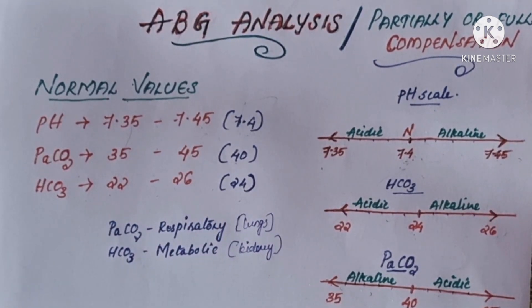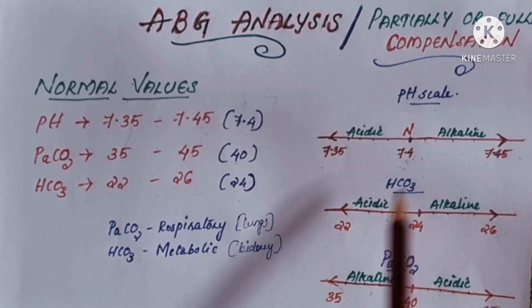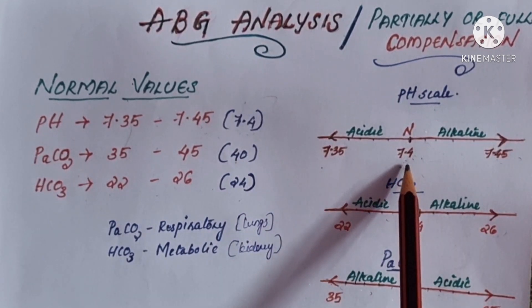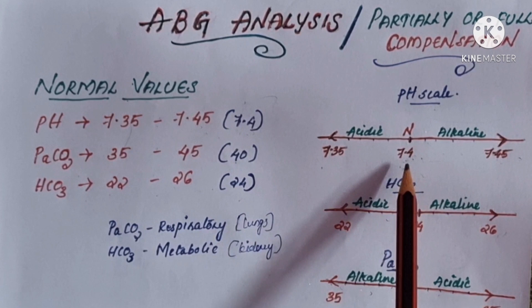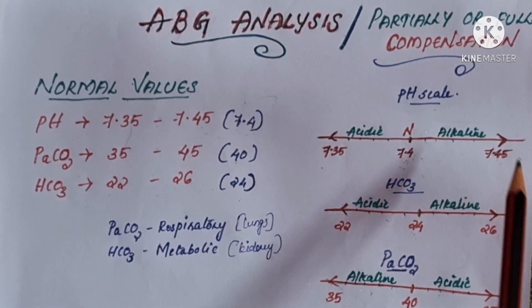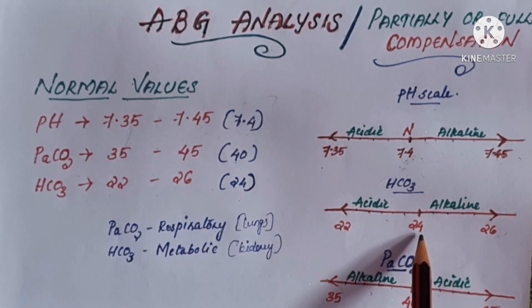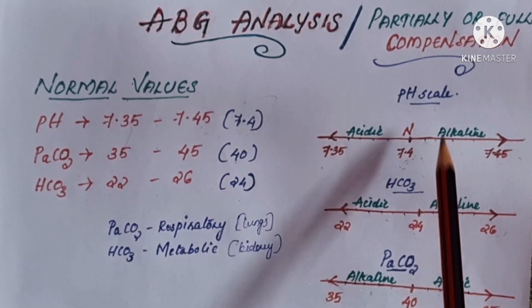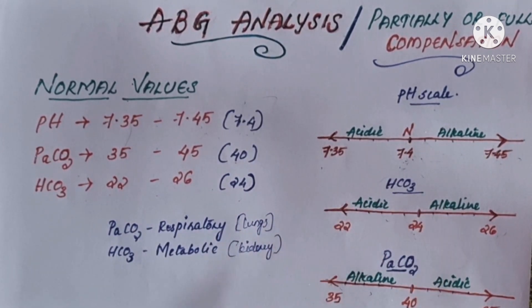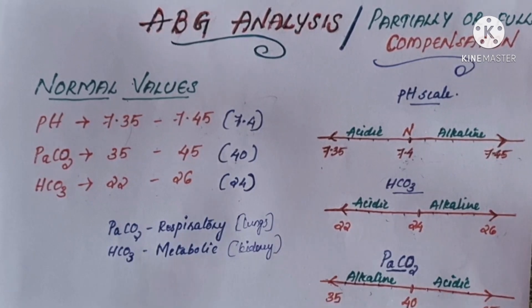To identify the compensatory mechanism easily, I'll show you a scale-like structure. I wrote 7.4 as the mean — below 7.4 is acidic and above 7.4 is alkaline. For bicarb, below 24 is acidic and above 24 is alkaline. PaCO2 is different: when PaCO2 is below 40 the blood becomes alkaline, and when PaCO2 increases the blood becomes acidic.